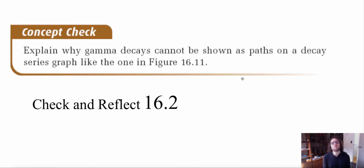Now, explain why gamma decays cannot be shown as paths on a decay series like in the graph. So I want you to pause this and think of what is gamma radiation? Why can it not be shown in a graph? What is the graph showing? Think of the x and y axis.